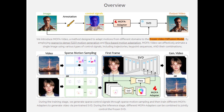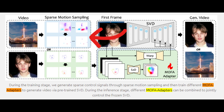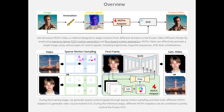Now let's dig into the technical details of how Mofa Video works. The model leverages a few advanced techniques. At the heart of Mofa Video is a pre-trained stable video diffusion model, which remains fixed during the training of additional components, ensuring consistent video quality. Mofa Adapters are specialized networks trained to handle different types of motion inputs — they adapt sparse control signals into dense motion fields that guide the video generation process. The first step is generating sparse control signals through motion sampling techniques, including trajectories, key point sequences, or a combination of both. Different Mofa Adapters are trained to generate video content by adapting the motion fields to the pre-trained SVD, ensuring that the generated videos are temporally consistent and high quality. During inference, various Mofa Adapters can be combined to jointly control the frozen SVD, allowing for complex and nuanced video animations.